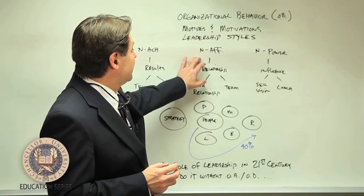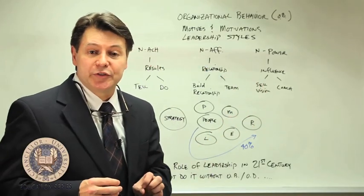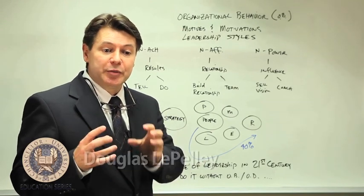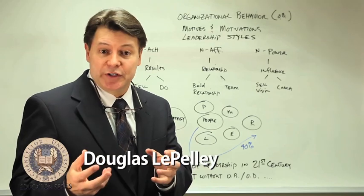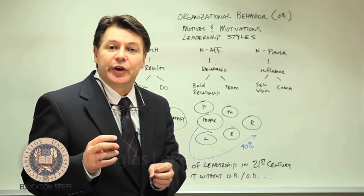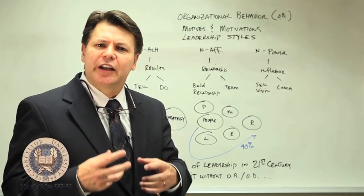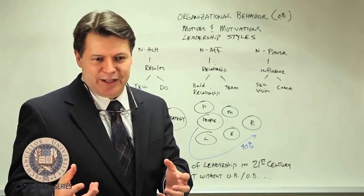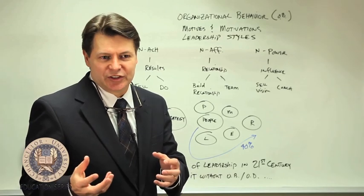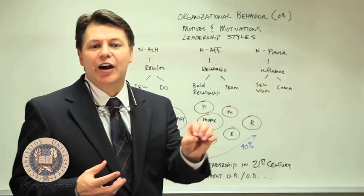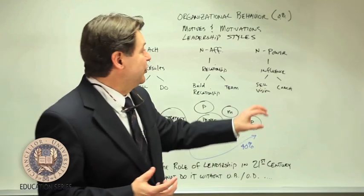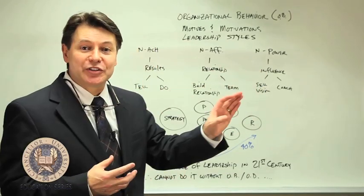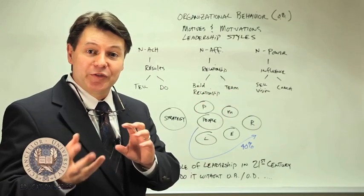A third category of motives and motivations are people with a high need for power. These are people who really love to have influence over others — they enjoy learning about topics and being the expert in the room. These are professors, politicians, that type of category. People with a high need for power love to have knowledge and use that knowledge, but there isn't a high drive to really do anything with it, which creates an interesting dichotomy.